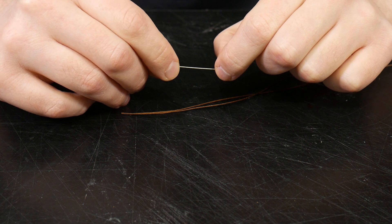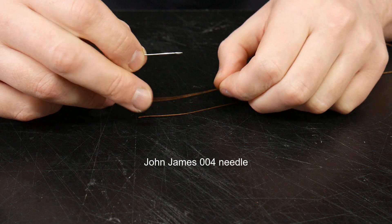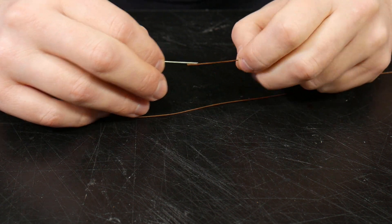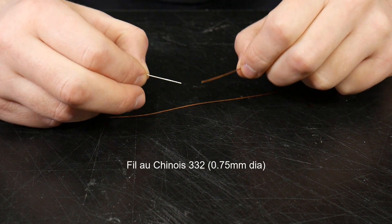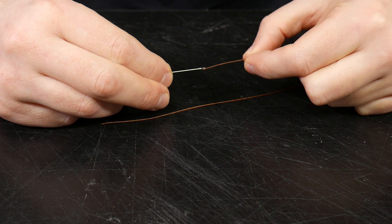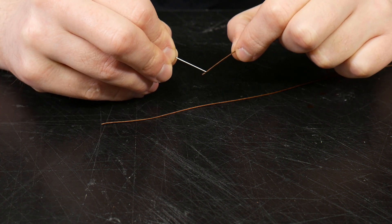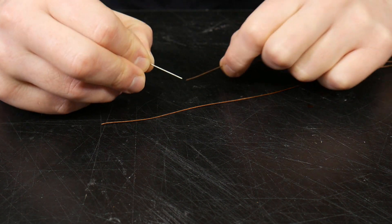So this is a very common John James 004 needle. Now this thread here is Philuchinois 332, and after waxing measures around 0.75 millimeters, which is larger than the hole of the needle itself. So how are we going to get it in there? Because right now it would be next to impossible.